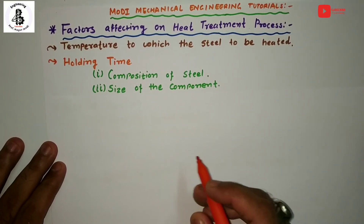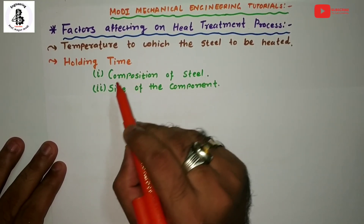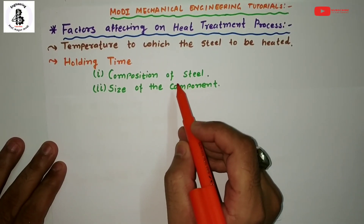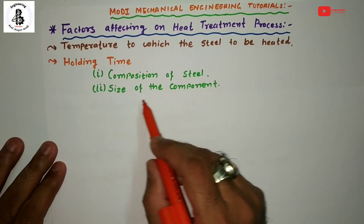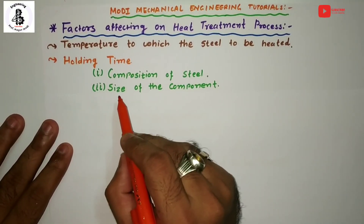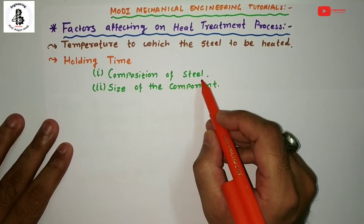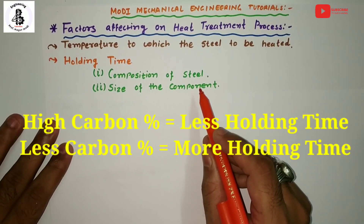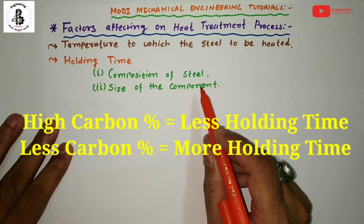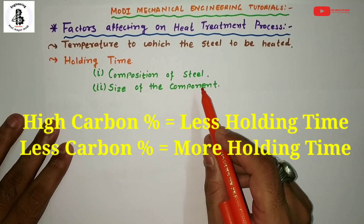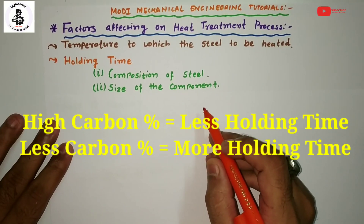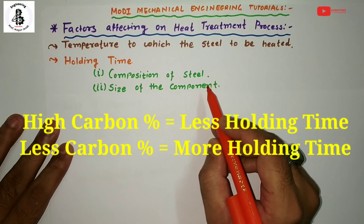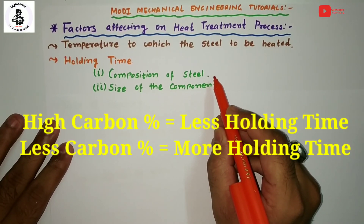The second important factor is holding time. Holding time depends upon the composition of the steel, meaning the weight percentage of carbon, and second, the size of the components. If the steel has a high carbon content, then the soaking time will be less as there is a chance of decarburization. If the steel has a high alloy content, then also the soaking time period will be less.